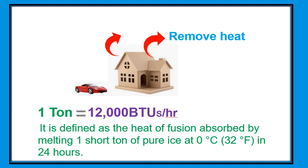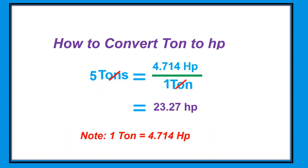One BTU is the energy needed to heat or cool one pound of water by one degree Fahrenheit at sea level. A ton of refrigeration is a unit of power used to describe the heat extraction capacity of air conditioning and refrigeration equipment. It is defined as the heat of fusion absorbed by melting one short ton of pure ice at zero degrees Celsius, or 32 degrees Fahrenheit.